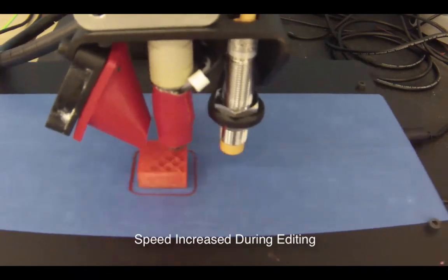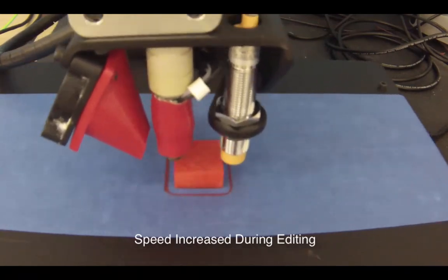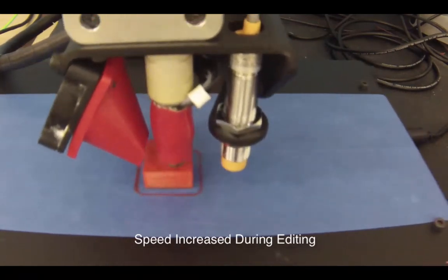When the printer gets to the top layers, it will again start to completely fill the layers to make the top of the object look more solid.